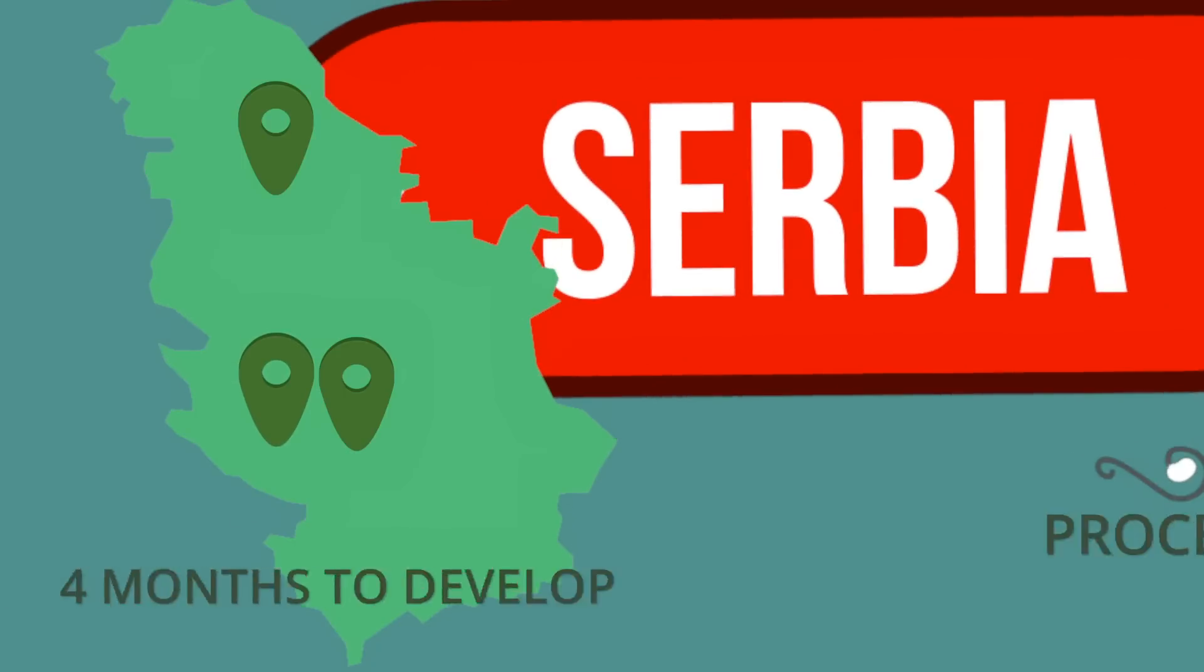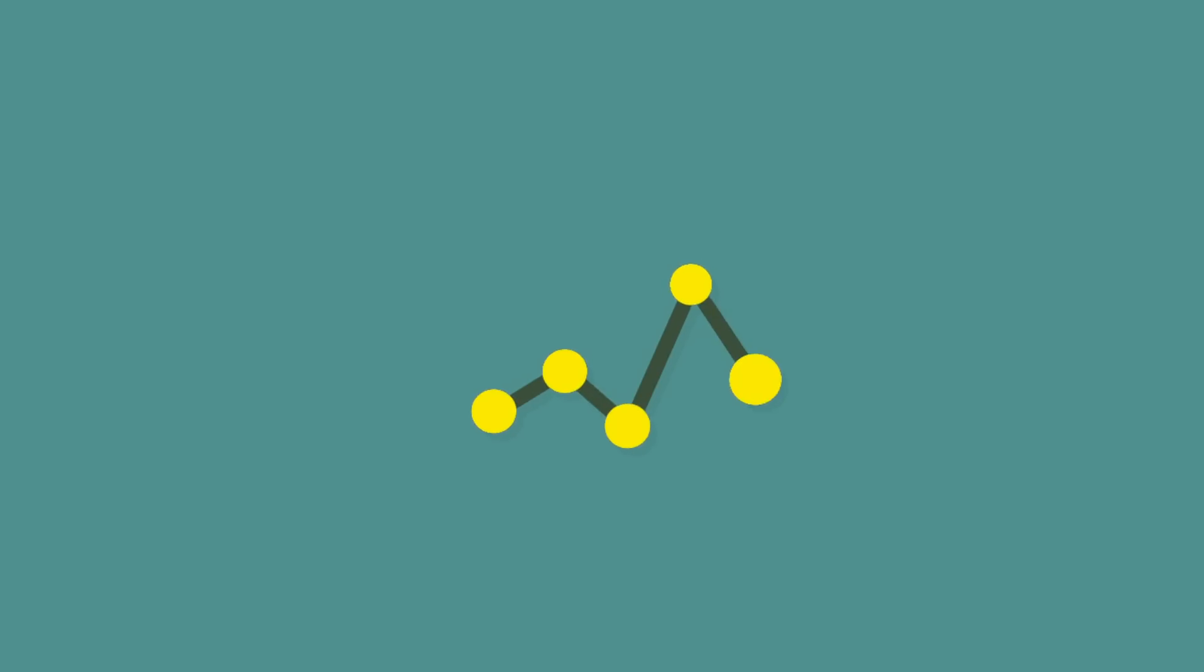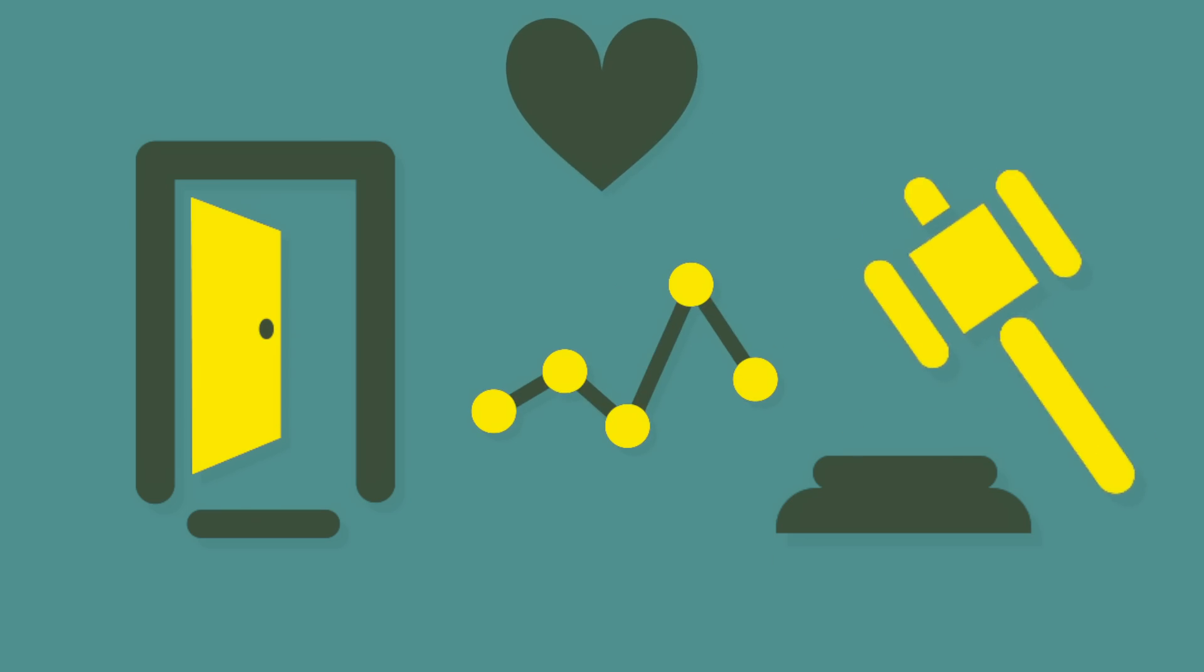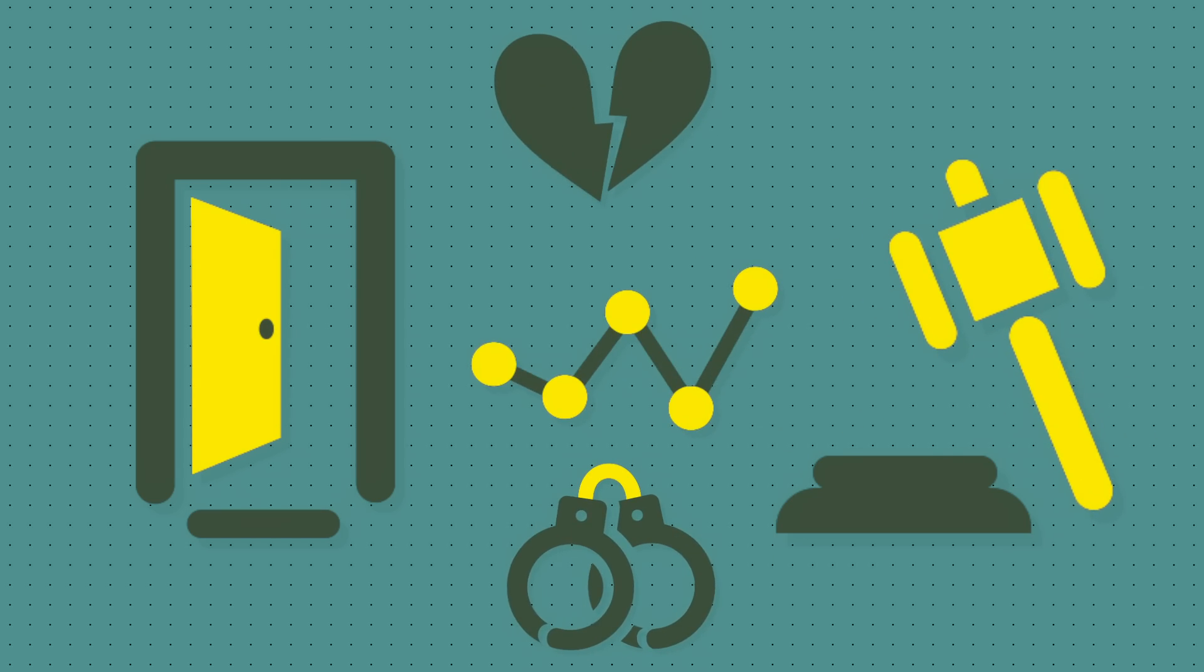In Serbia, it took four months to develop a series of process maps in different parts of the country. We measured four rules-based processes: how to evict a tenant, how to enforce an unpaid bill, how to get a divorce, the prosecution of a domestic violence case.